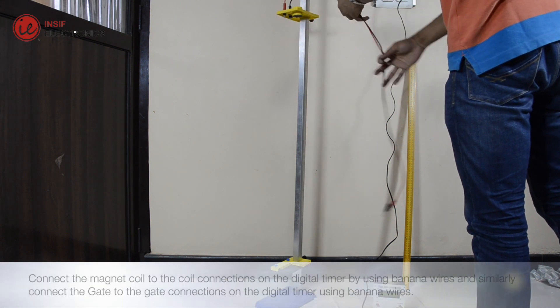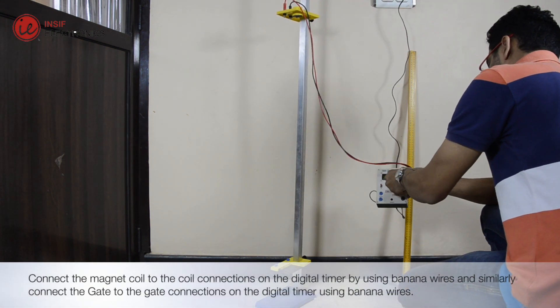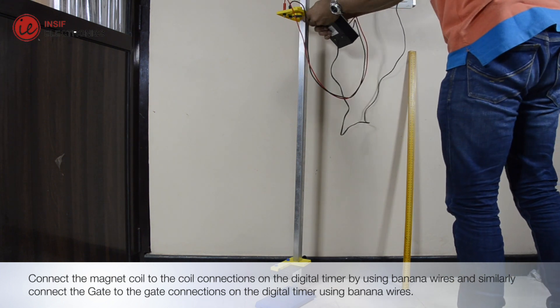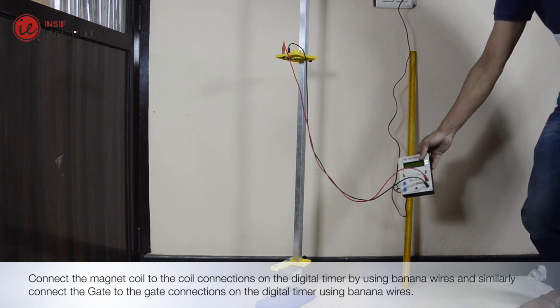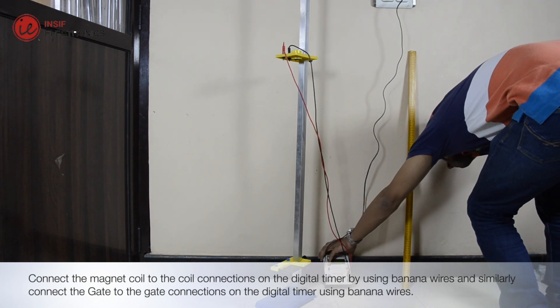Connect the magnet coil to the coil connections on the digital timer by using banana wires. And similarly connect the gate to the gate connections on the digital timer using banana wires.